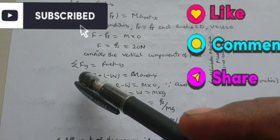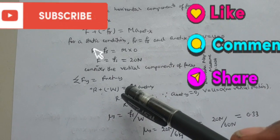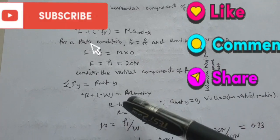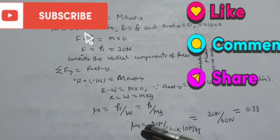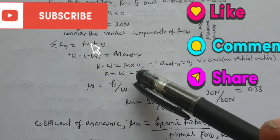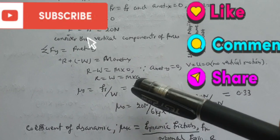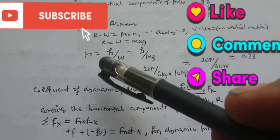From the vertical component, normal reaction is acting upward and weight is acting downward. The normal reaction will be equal to weight, which is always equal to mass times acceleration due to gravity.